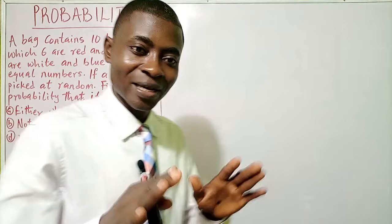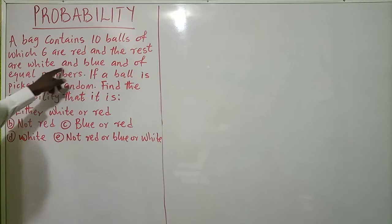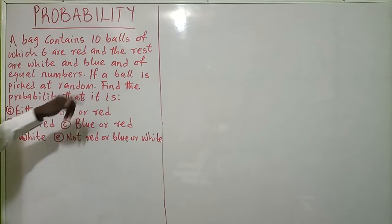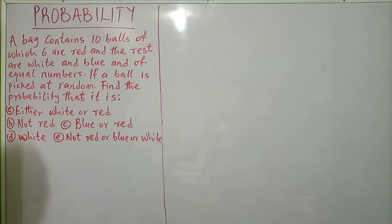Welcome everyone once again to Joshua Paul Line Math, still on probability. We have a question here: a bag contains 10 balls of which 6 are red, and the rest are white and blue in equal numbers. If a ball is picked at random, find the probability that it is either white or red; not red; blue or red; white; and not red or blue or white.